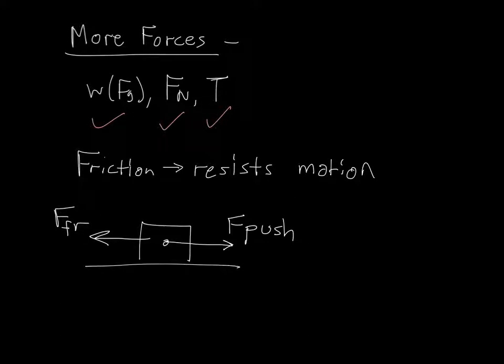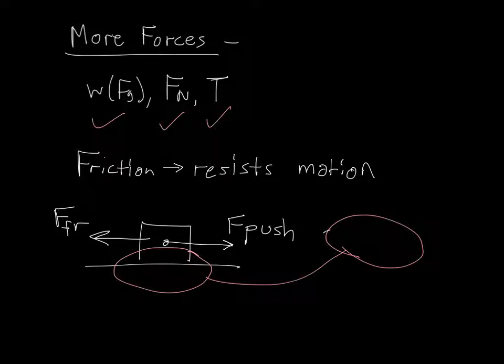And it exists because if we zoom in really close, at a microscopic level, these boxes, this box and this floor, they're not flat. They're very jagged and rough. So at a microscopic level, these two jagged pieces are really rough and rubbing against each other. And that is the manifestation of friction, the rough atomic scale rubbing between two surfaces.